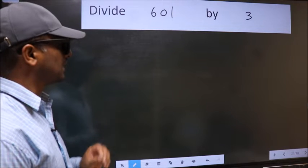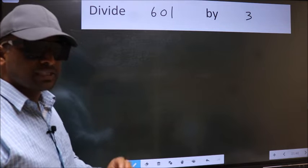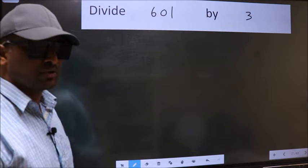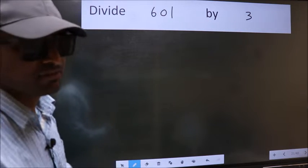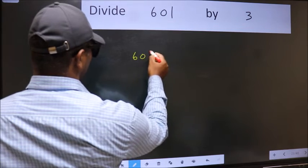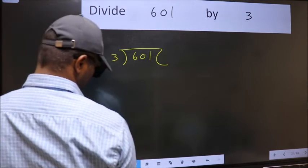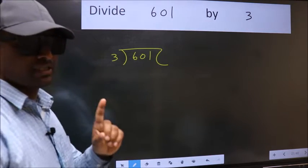Divide 601 by 3. While doing this division, many do this mistake. What is the mistake that they do? I will let you know. But before that, we should frame it in this way. 601 and 3 here. This is your step 1.